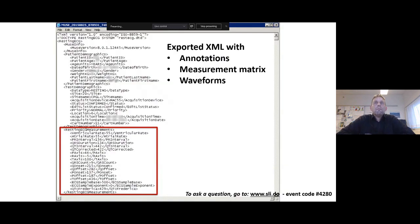But I think the most important format that we use in our research is the XML format that we can export from MUSE because here we have everything in one single file. We have the annotations of fiducial points so we can know where all the intervals are measured on the ECG waveforms. We have the ECG measurements in the measurement matrix. I've highlighted some of them here in the red rectangle. More importantly, we also have access to the raw ECG waveforms because they are included in the export of the XML files.